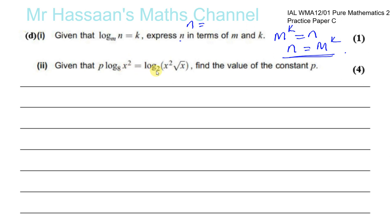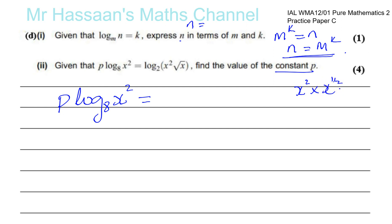Part d(ii): given that p times log to the base 8 of x squared equals log to the base 2 of (x squared times root x), find the constant p. First, simplify the right side: x squared times x to the power of a half equals x to the power of 4 over 2 plus 1 over 2, which is x to the power of 5 over 2. So the right side becomes log to the base 2 of x to the power of 5 over 2.